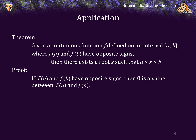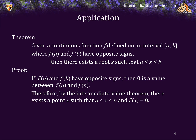Proof: If f(a) and f(b) have opposite signs, then 0 is a value between f(a) and f(b). Therefore by the Intermediate Value Theorem, there exists a point x in the interval (a, b) where f(x) equals 0. If such a point x exists, then f indeed has a root on the open interval (a, b), and therefore there is a root on the interval [a, b].